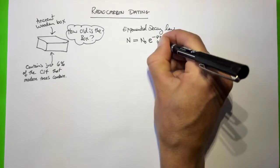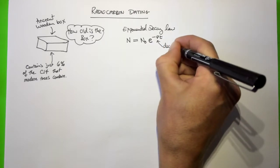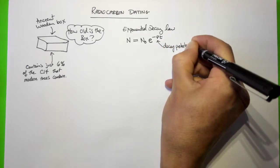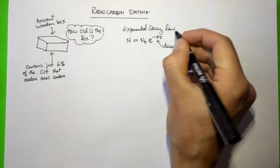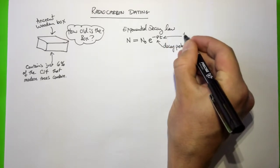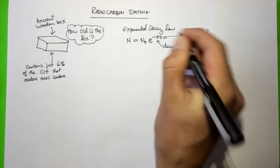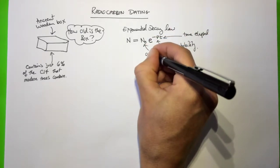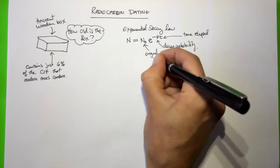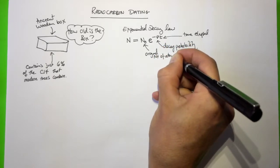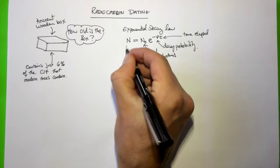Now what is P? P is the decay probability for those specific atoms. T is the time elapsed, original number of atoms. It also works for the original activity rate.